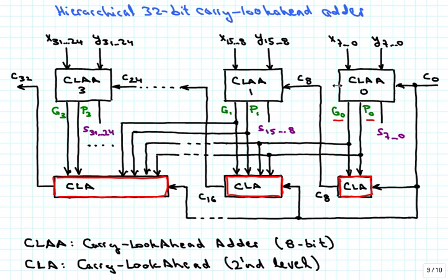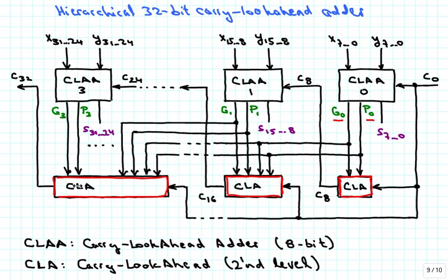More importantly, we create C16 by having G0, P0, G1, and P1 available directly, bypassing computations in the second adder. For the last carry C32, the circuit takes into account capital P0, G0, P1, G1, P2, G2, P3, and G3 all at once. So C0 goes into each of those carry lookahead blocks and can be processed directly, rather than having to ripple through the first, second, third, and fourth stages.